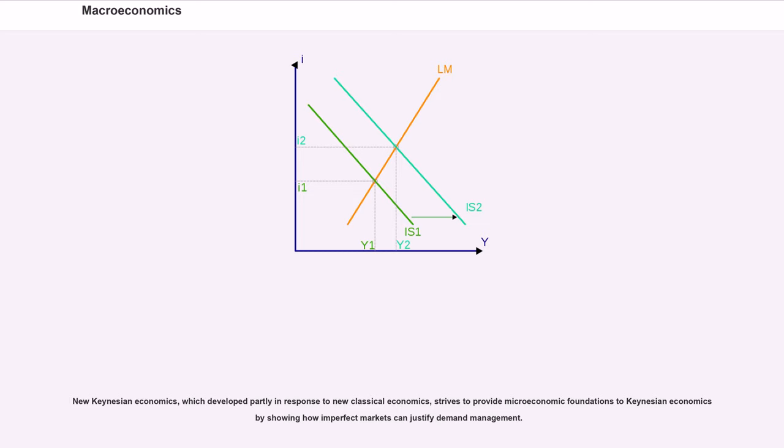New Keynesian economics, which developed partly in response to new classical economics, strives to provide microeconomic foundations to Keynesian economics by showing how imperfect markets can justify demand management.